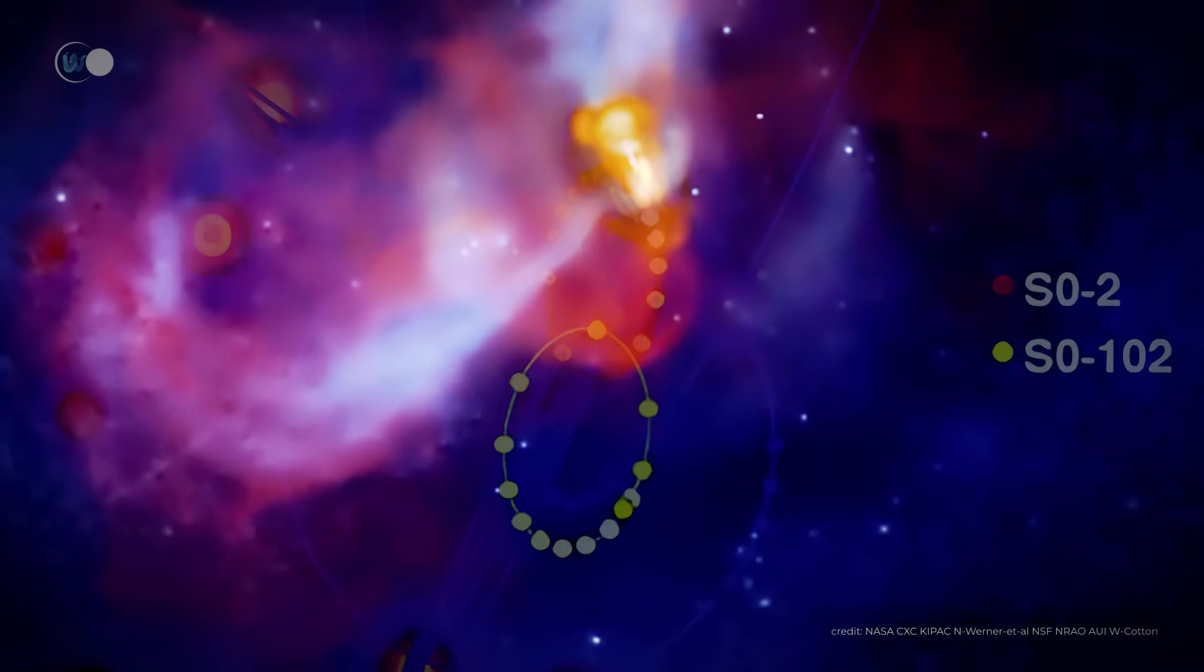NGC 7252, also known as Atoms for Peace, is a lenticular galaxy found in the constellation Aquarius, some 220 million light years from Earth. The galaxy was discovered in 1785 by the astronomer William Herschel. NGC 7252 is the result of the merger of two galaxies. Around one billion years ago, two spiral galaxies collided, one becoming a host galaxy and the other a feast galaxy.